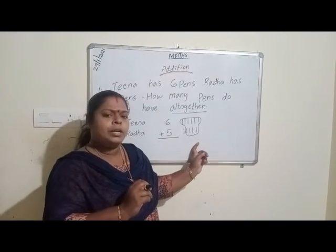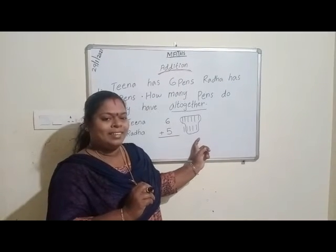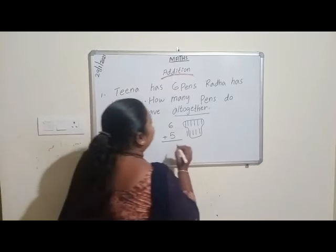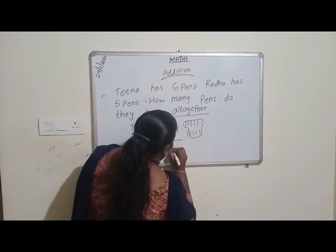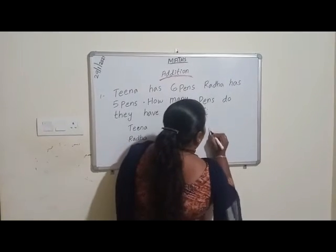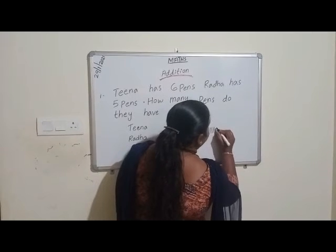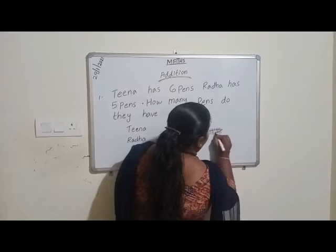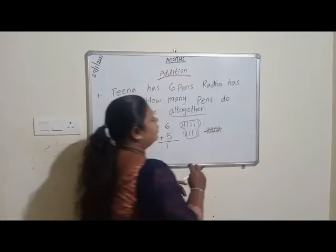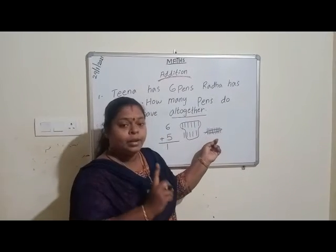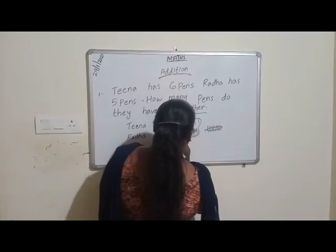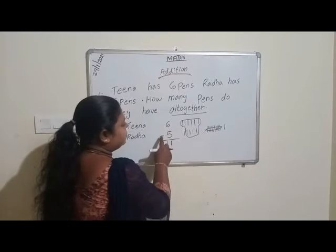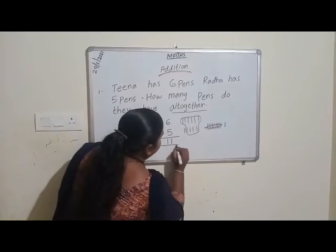Now, let's count. How many ones? 1, 2, 3, 4, 5, 6, 7, 8, 9, 10. So, 6 plus 5 is equal to 11.